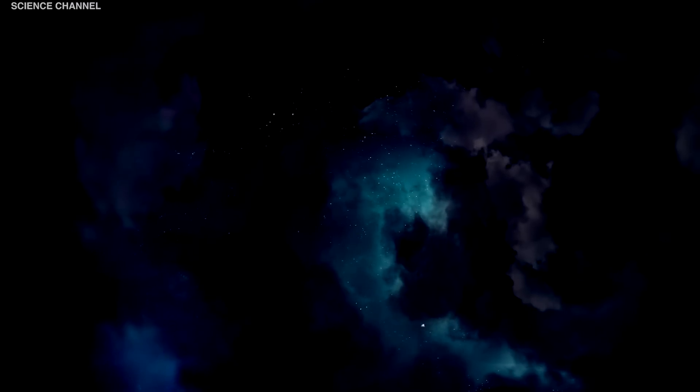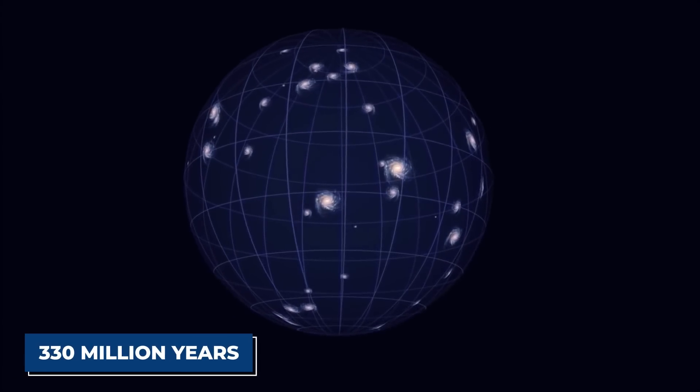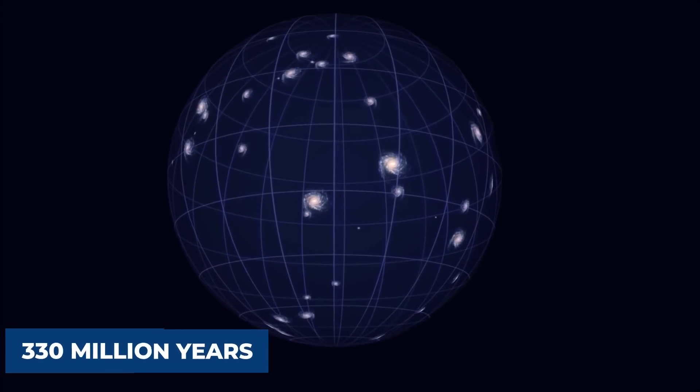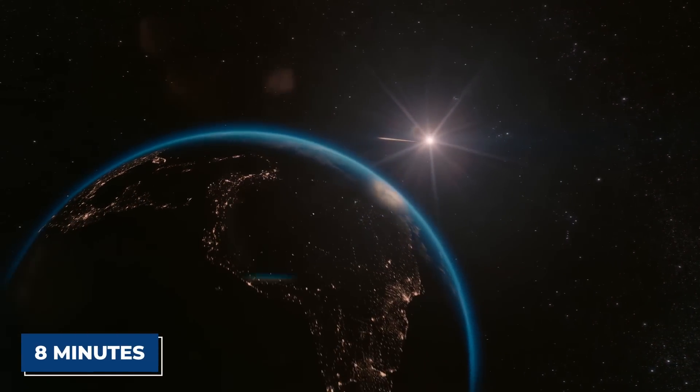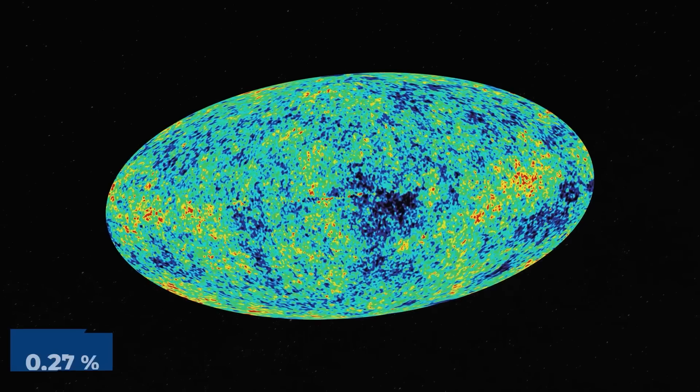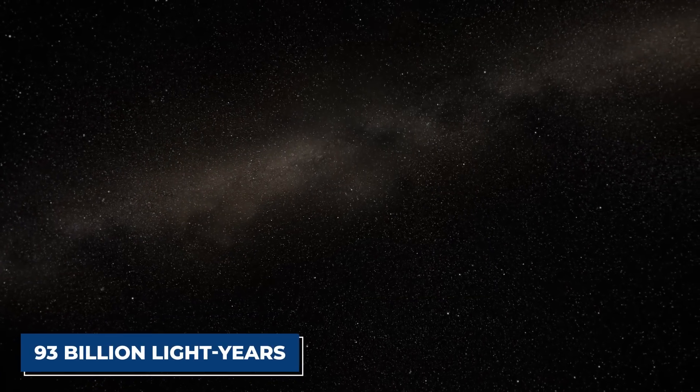Just how large is the Boötes Void? Light can travel for 330 million years from one side of the void to another. In comparison, light takes about 8 minutes to get to us from the Sun. In fact, this is about 0.27% of the observable universe, which is a massive 93 billion light-years across.